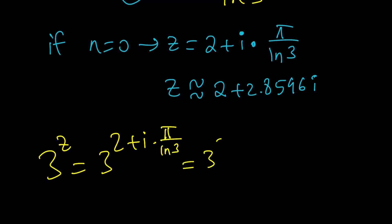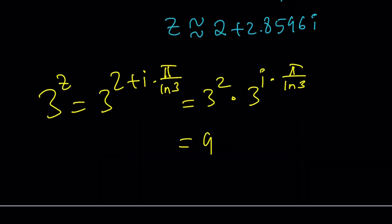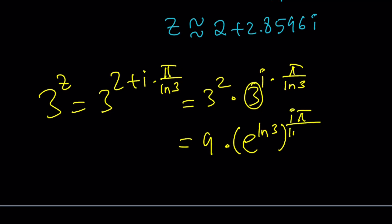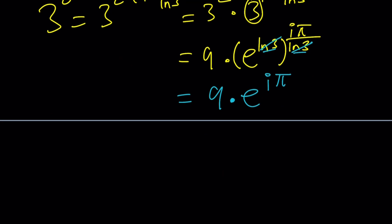We compute 3 to the power of 2 plus i·π/ln(3). First, separate these: 3 squared is 9. Then replace 3 with E to the power ln(3), and multiply by i·π over ln(3). When the exponential is exponentiated, the exponents multiply — ln(3) cancels out, leaving us with 9 times E to the power i·π. And E to the i·π is negative 1. So 9 times negative 1 equals negative 9. We got negative 9!